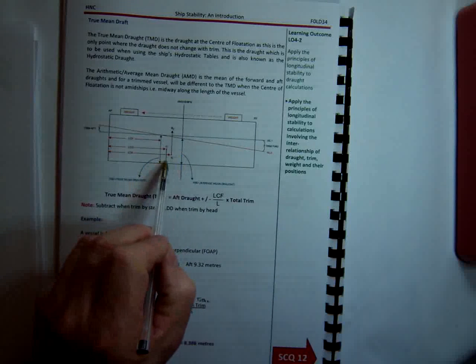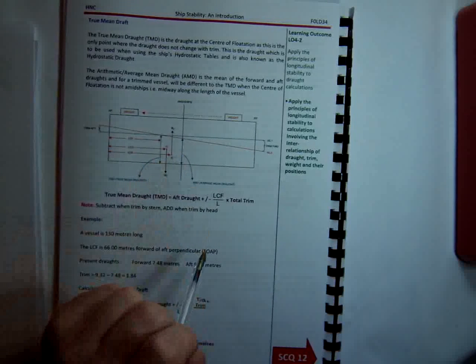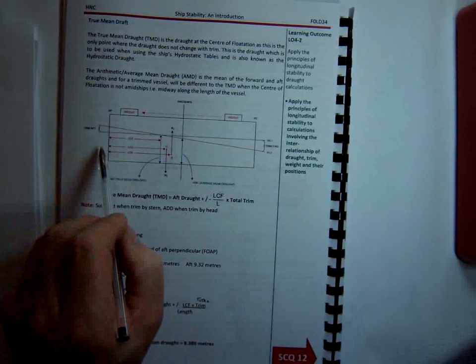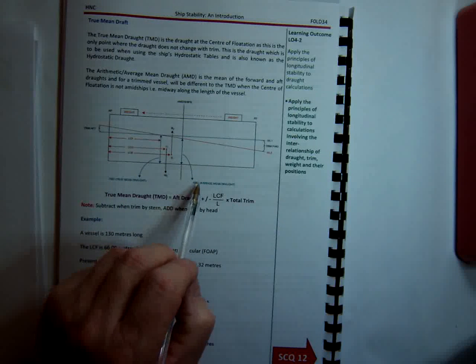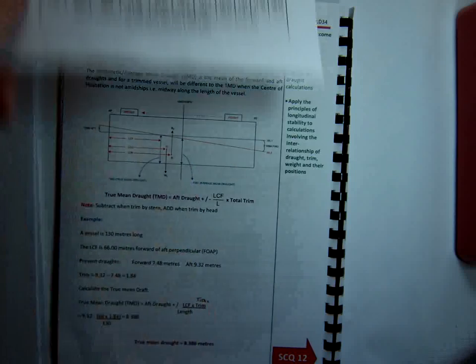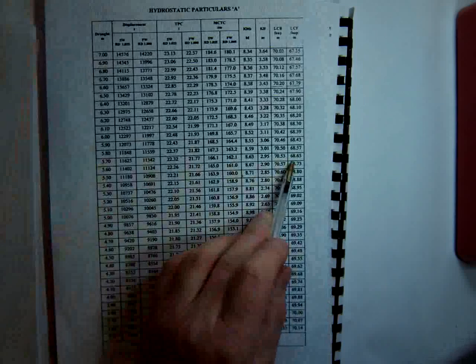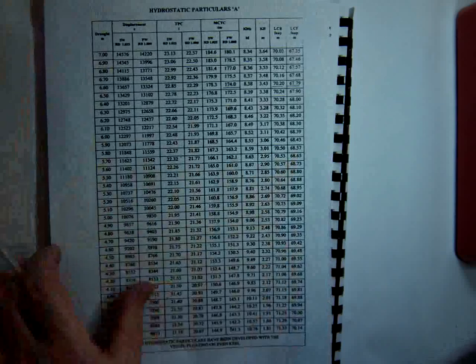So it's important that, true mean draft, average mean draft. Well how do we get our true mean draft? If we know our drafts forward and aft, then what we would do, we would work out our average mean draft. And then with that, we would go into the tables and look up our LCF with the average mean draft.